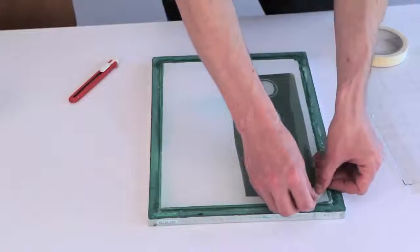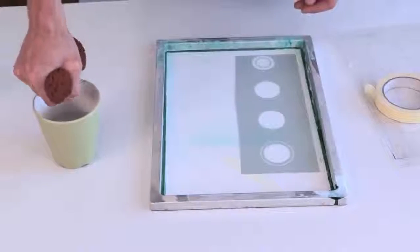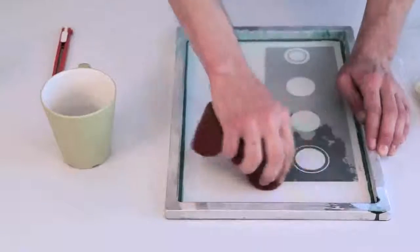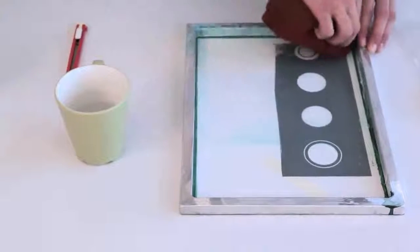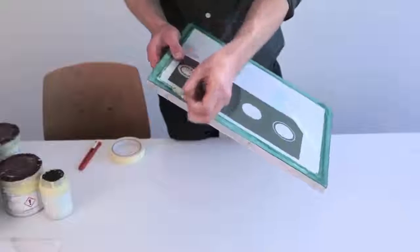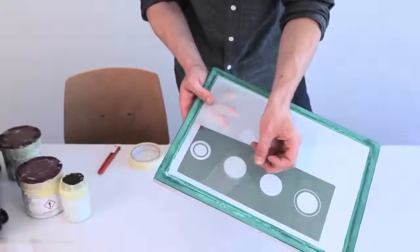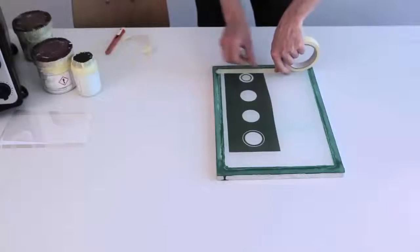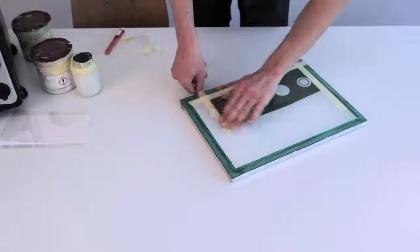Place some masking tape to ensure that it stays in place. Use a sponge to apply water across the screen. You'll be able to see where it's adhered correctly. Once the film is adhered and dried, you can remove the contact sheet. Mask off any blank areas on the screen with masking tape.